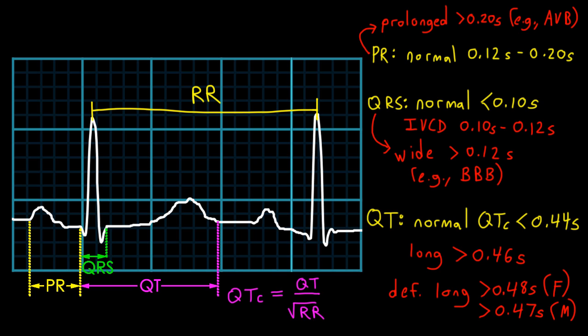A quick eyeball method of figuring out whether a patient's QT interval is normal is to see if the QT interval is less than half the distance between two consecutive QRS complexes. In other words, is the QT less than half of the R to R?